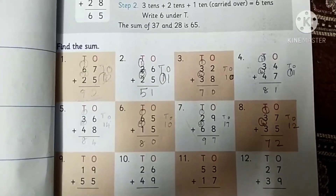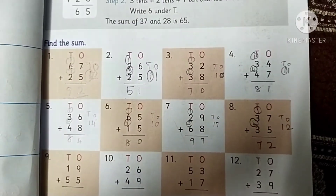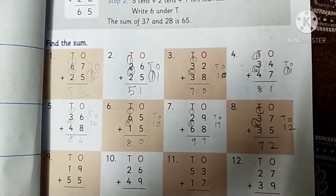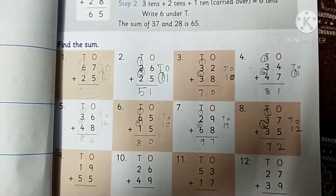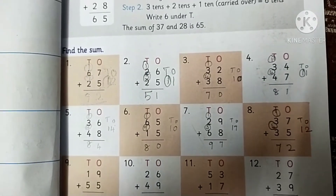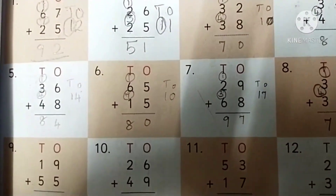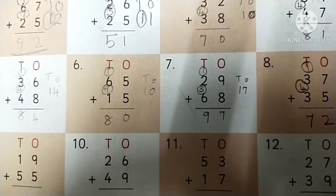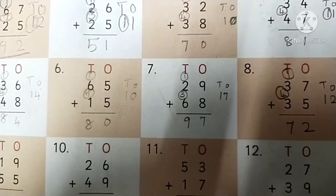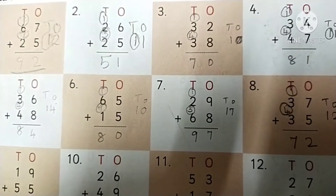Students, check the answer for the remaining sums. 3rd one: 70. 4th one: 81. 5th one: 84. 6th one: 80. 7th one: 97. 8th one: 72. Very good children.